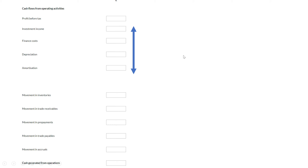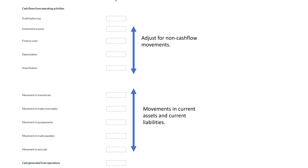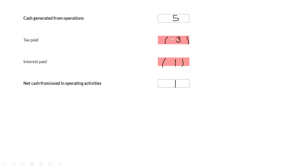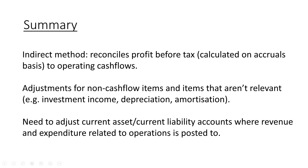To summarize: we start with profit before tax, add back non-cash flow items, then adjust for movements in current assets and liabilities to get the cash generated from operations. From that, we take away tax and interest payments to get the net cash from operating activities — those two items are actual cash flows you need to work out. For current assets, the adjustment sign is always opposite; for current liabilities, the sign is always the same. Thanks everyone, bye!